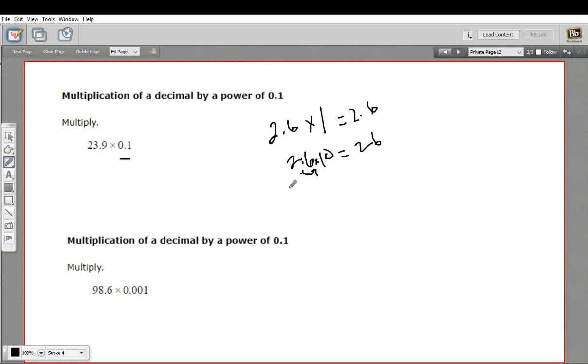Now, when we're doing 0.1, what we do is move the decimal place the other direction. So it goes one place to the left. So that would be 0.26.